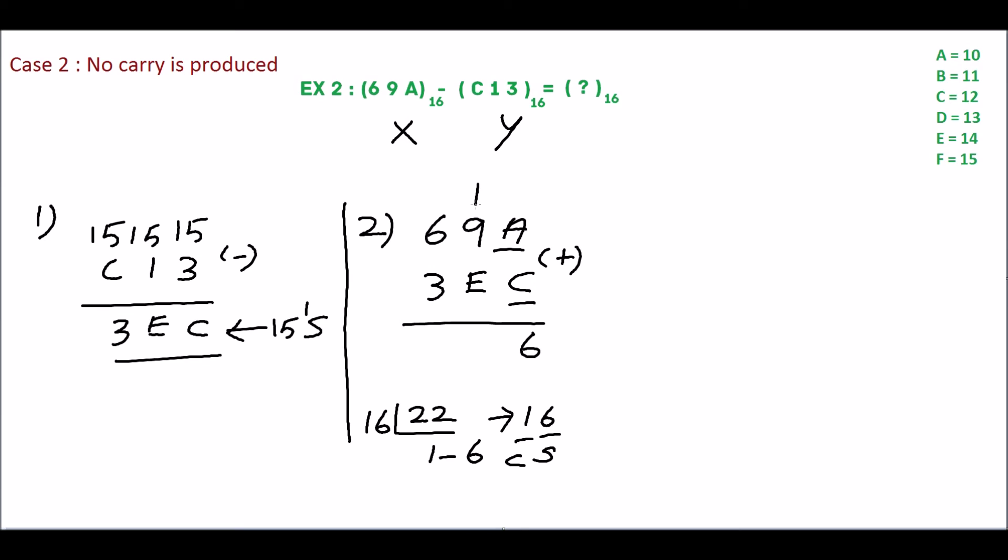Then add 1 plus 9 plus E. E is equivalent of 14, so 10 plus 14 is 24. 24 is also not a hexadecimal number. We will convert this. The quotient is 1 and the remainder is 8.